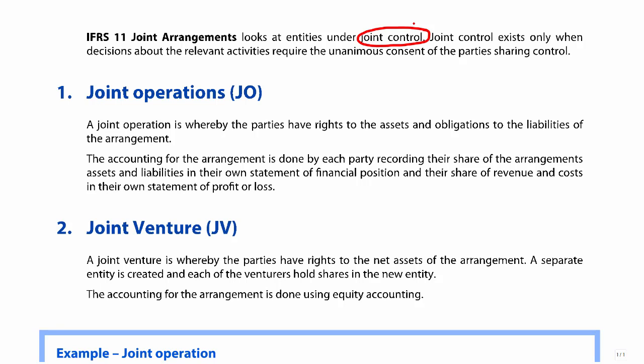But in order for there to be joint control, there needs to be a legally binding document between the two parties that says we require the unanimous consent of both parties — i.e., we both need to come together and agree. If we both come together and one party disagrees, then nothing happens. So we don't have control by ourselves; we have joint control. All parties need to come together and agree on the decision. If that's the case, we have joint control, unanimous consent, and there needs to be a legally binding document between the parties.